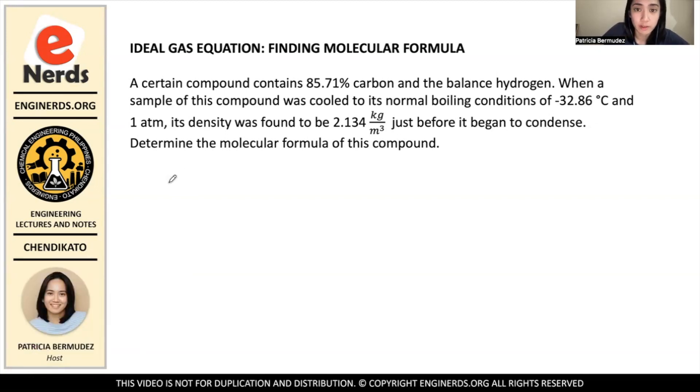We have the temperature is -32.86°C. We have pressure at 1 atm and we have density that is 2.134 kg/m³.